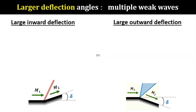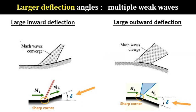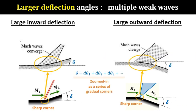In the case of a larger deflection angle δ, it can be thought of as consisting of a series of small deflection angles: δ equals δθ1 plus δθ2 plus δθ3, and so on. Each small angle creates a single Mach wave. So for a large angle, there'll be multiple Mach waves.